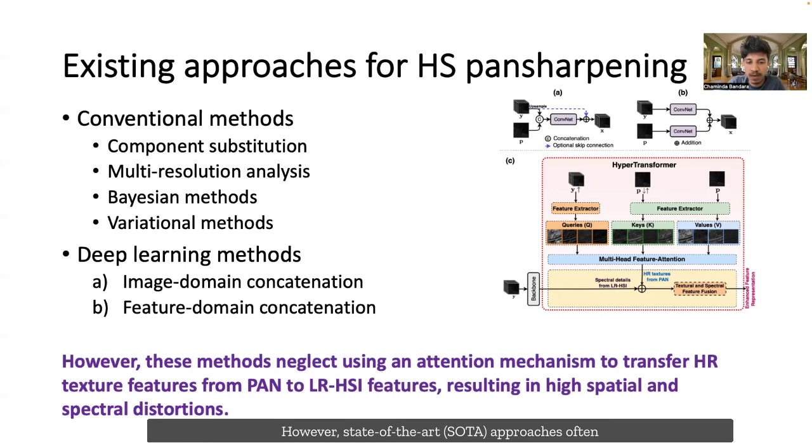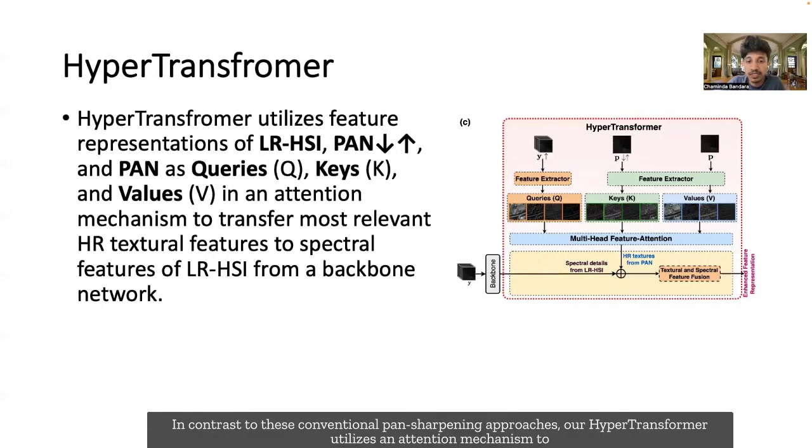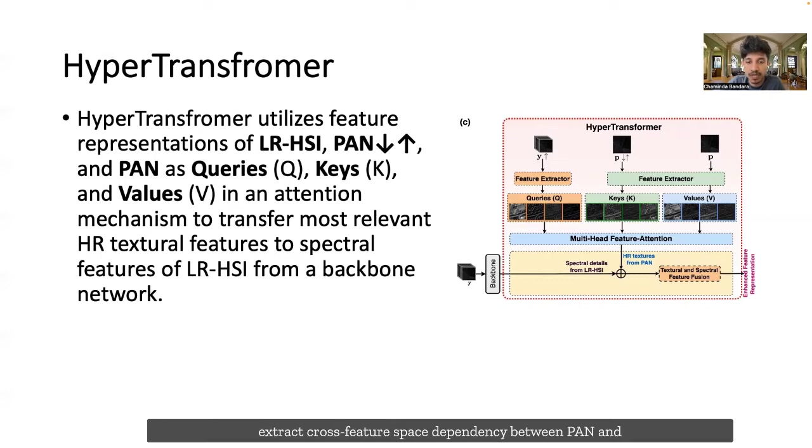However, state-of-the-art approaches often adopt straightforward ways to transfer spatial details from pan-image to low-resolution HSI. In contrast to these conventional pan-sharpening approaches, our hyper-transformer utilizes an attention mechanism to extract cross-feature space dependency between pan and low-resolution HSI features and finds texturally advanced and more spectrally similar feature representations for low-resolution HSI before fusion,